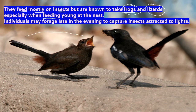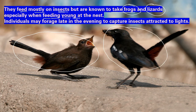This is the young one of Indian robin and this is the parent. Now, which bird is it with — male Indian robin or female? Generally, individuals watch late in the evening to capture insects and attract them to lights.